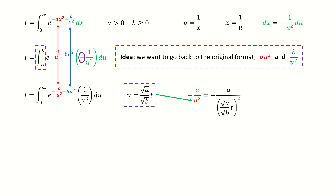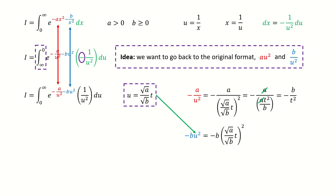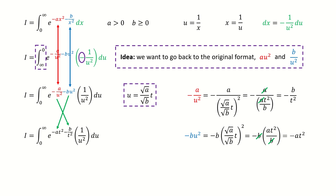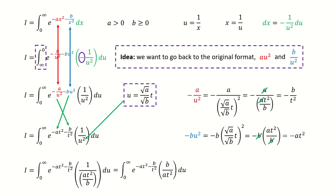We plug in this substitution into this red term, so we got here. Then we square the denominator — a cancels out. And then we flip this constant b to the numerator. Next, we plug in this substitution into this blue term and square it, so b cancels out. Now we plug in these simplified results into this integral to replace this red and this blue term. Next, we plug in the substitution to replace the u squared, and we got here after squaring the denominator. And then we flip this constant b to the numerator.